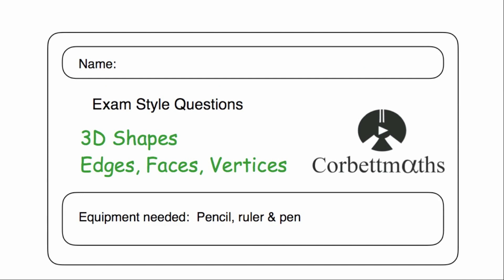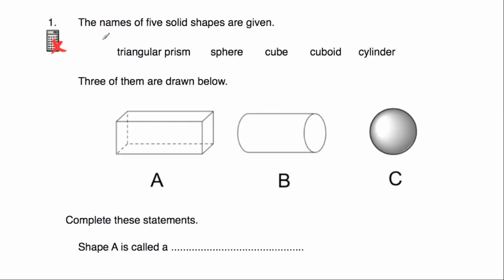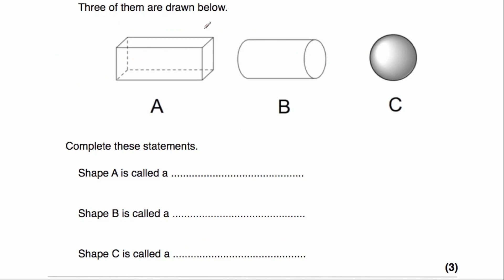Question number 1. The names of 5 solid shapes are given: triangular prism, sphere, cube, cuboid, and cylinder. Three of them are drawn below as shapes A, B, and C, and we've been asked to complete these statements. Shape A is called a cuboid.